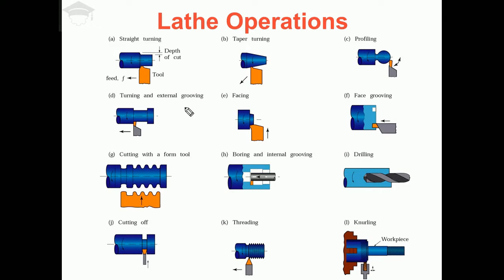Next comes turning and external grooving. Turning and external grooving means we have to reduce the diameter of the workpiece not at the end but somewhat in the middle. In straight turning we reduced the diameter at the end, but here we reduce the diameter somewhere in the middle of the workpiece.